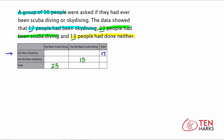Now we can fill in the rest of the table. We know 50 people were surveyed, so the total in the bottom row and the right-hand column must equal 50. To find how many people have not been scuba diving, we subtract: 50 minus 23 equals 27. So 27 people have not been scuba diving, and 23 plus 27 gives us the total of 50.